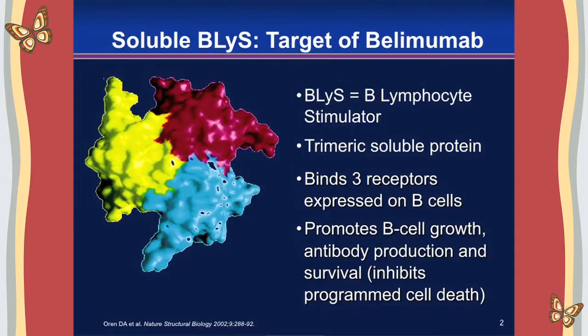Belimumab is a BLyS-specific inhibitor. The target is BLyS, which stands for B-lymphocyte stimulator, and it is a trimeric soluble protein. There are three what are called homotrimers — three similar or identical components — and when the three come together, they make up the biologically active BLyS.